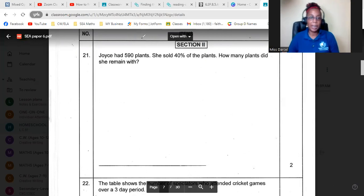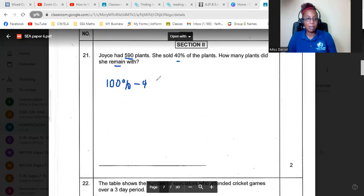So we have our first question here. Joyce had 590 plants. I like to underline my keyword clues. She sold 40% of the plants. How many plants did she remain with? So there are two ways we could do this. We could do 100% minus 40%, which is 60%. Then we find 60% of 590. So let's do that. You should know your fractions, decimals, and percentages, especially the fraction breakdown.